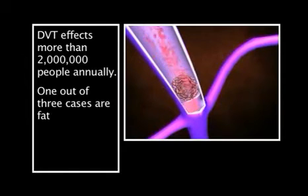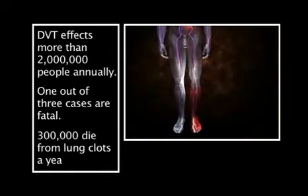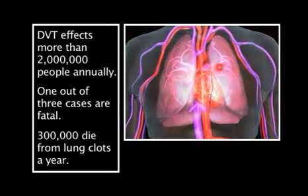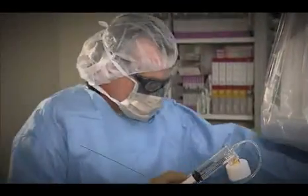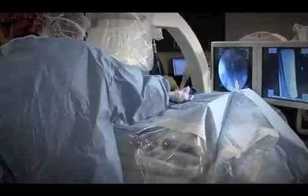We can treat both these conditions with aggressive catheter techniques. The way we treat clots in the deep veins of the legs is we put the patient on their abdomen so they're prone, then we put a little tiny needle into the popliteal vein behind the knee, and then we thread catheters — little tubes — up the leg and into the clot.